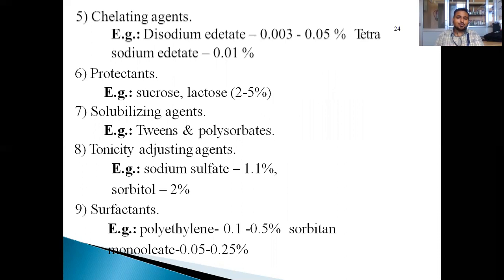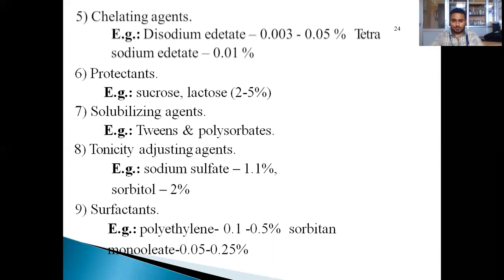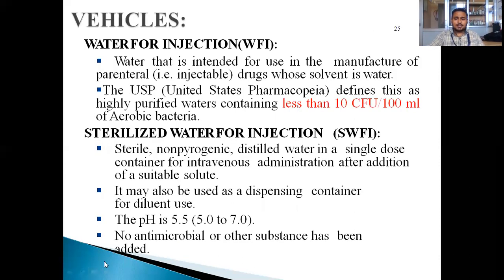Protectants we are using include sucrose and lactose at 2 to 5%. Solubilizing agents include Tween and polysorbate. Tonicity-adjusting agents include sodium sulfate and sorbitol. Surfactants we are using include polyethylene at 0.1% to 0.5%, and sorbitan monooleate at 0.05% to 0.25%. These are mainly the excipients used for small-volume and large-volume parenterals.